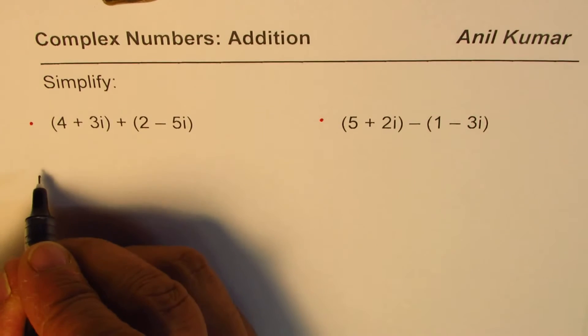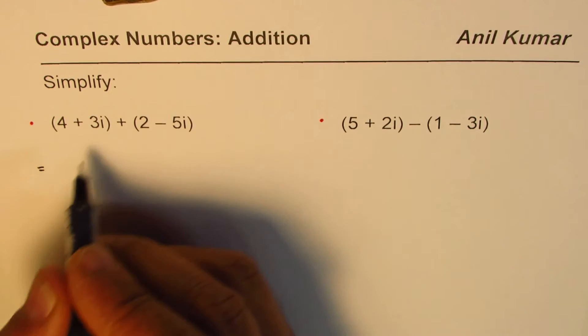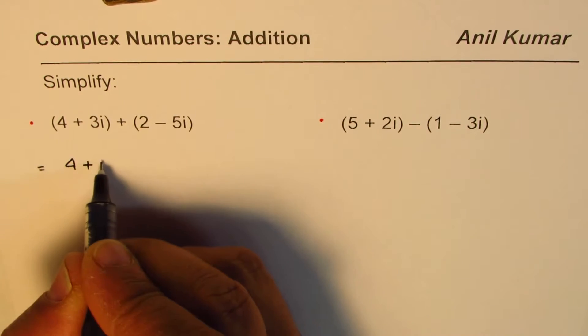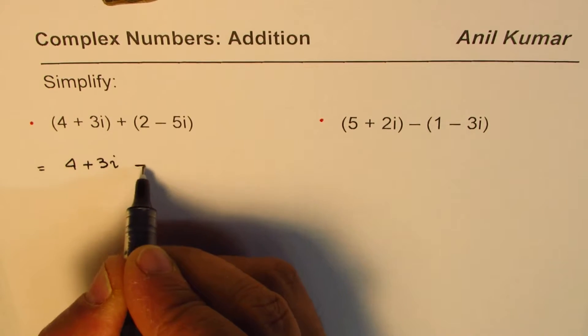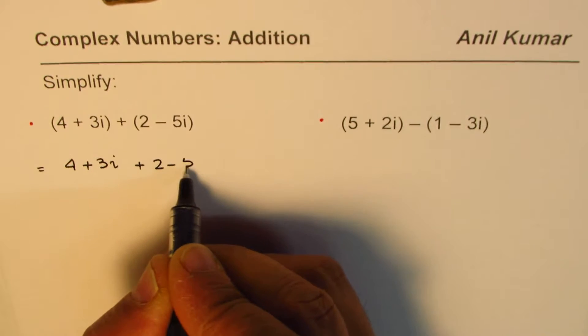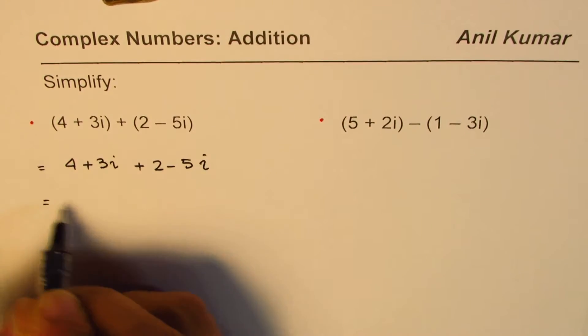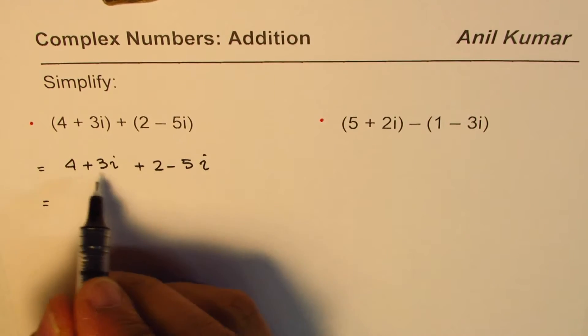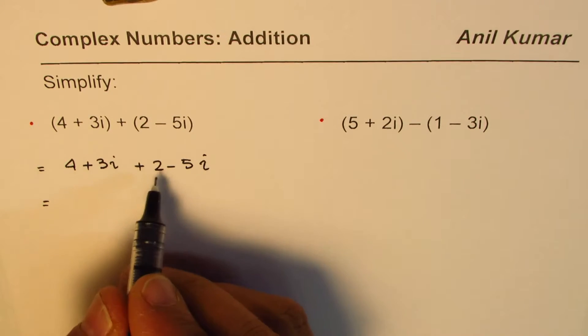Let's do the first one: (4 + 3i) + (2 - 5i). Let's open the bracket first, so we have 4 + 3i + 2 - 5i. Now we should rearrange, combining the like terms—in this case, the real terms and the imaginary terms.